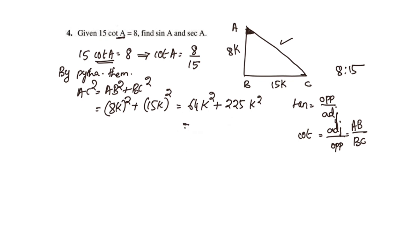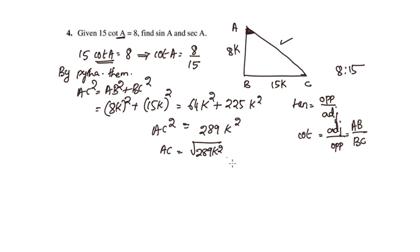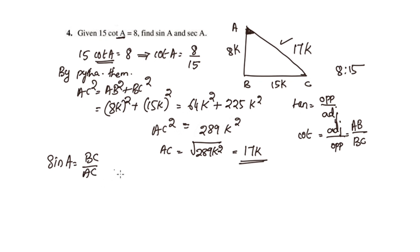64 plus 225 equals 289K squared, so AC equals 17K. Now sin A equals opposite by hypotenuse, that is BC by AC, which is 15K by 17K. K and K cancel, giving sin A equals 15 by 17.